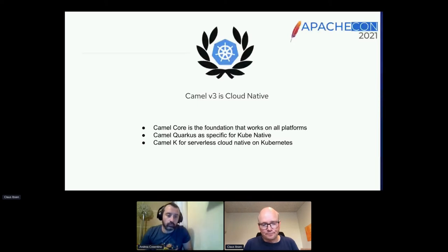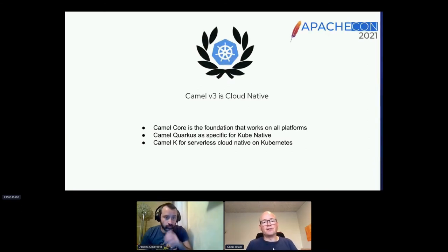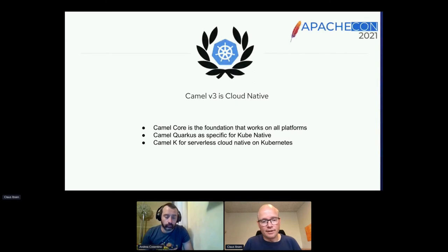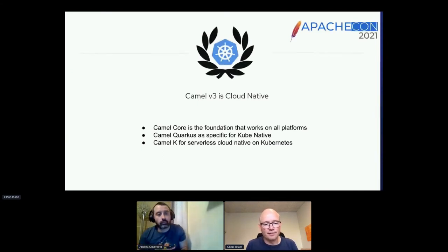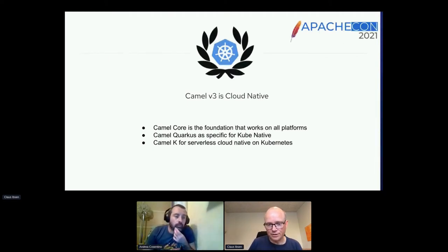Camel 3 is cloud native — an important goal. We have the core project as the foundation for all sub-projects. Two sub-projects fit particularly well with cloud native: Camel Quarkus, which can run in a cloud-native or Kubernetes-native way, and Camel K, the specific product for cloud-native and serverless. Quarkus is similar to Spring Boot — you can run it anywhere, but it has special benefits on Kubernetes. I won't steal any thunder from Nicola's talk about Camel K later today, so make sure to catch that session.